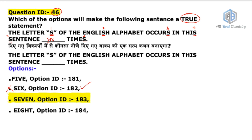This becomes true if you follow the CSIR answer key, which is 7. If you write 'seven' — S, E, V, E, N — and count all the S's in the completed sentence, there are exactly seven S's and it also says seven. Everything is true. So the statement becomes a true statement. The answer key for Question ID 46 is completely correct.